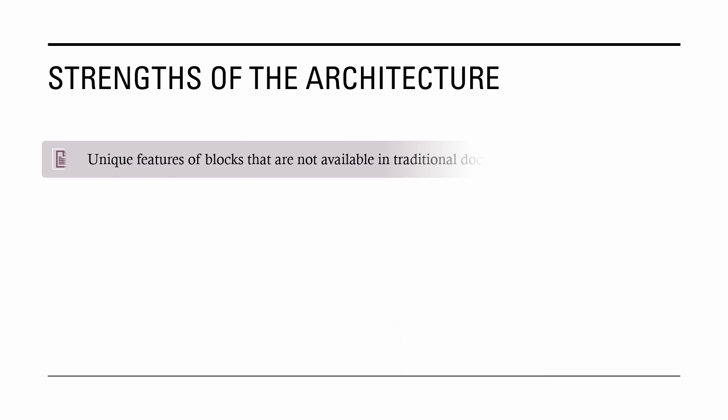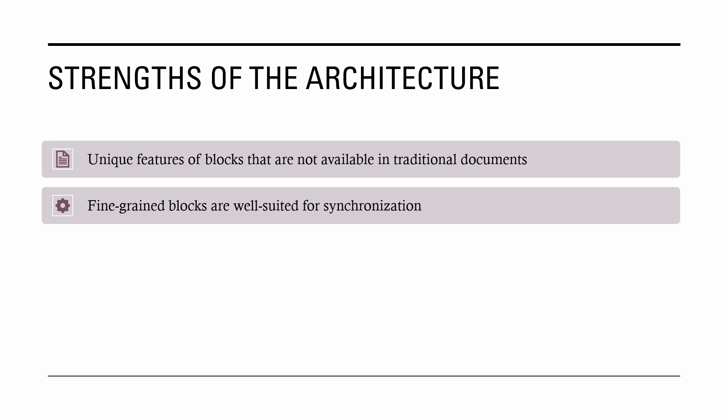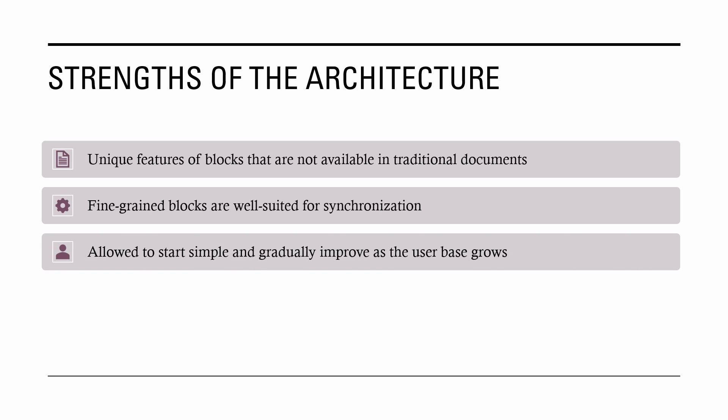Strengths: Blocks' data model supports features that are not available in traditional documents, such as reusing the same content in multiple pages and storing pages inside tables. Blocks are also better units for synchronization compared to traditional documents — using blocks decreases the network traffic sent from clients and reduces conflicts when multiple users are working on the same document. Additionally, a relational database allowed Notion's engineering team to start small, quickly build the first version, and then gradually iterate and scale their system from a few hundreds to millions of active users.